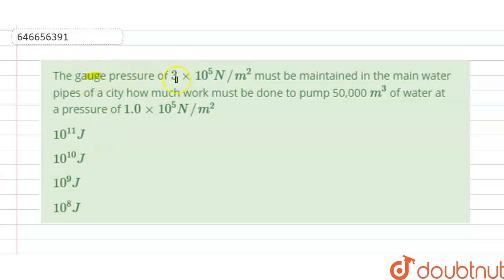The gauge pressure of 3×10^5 N/m² must be maintained in the main water pipe of a city. How much work must be done to pump 50,000 m³ of water at a pressure of 1×10^5 N/m²? We have four options given here.